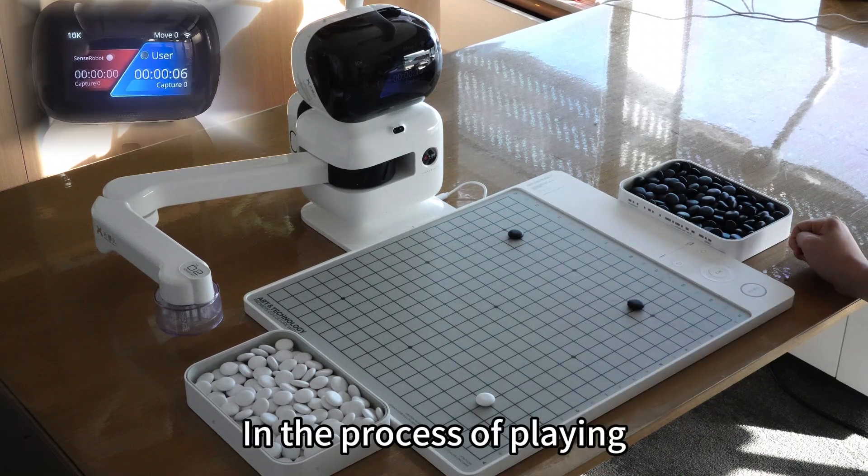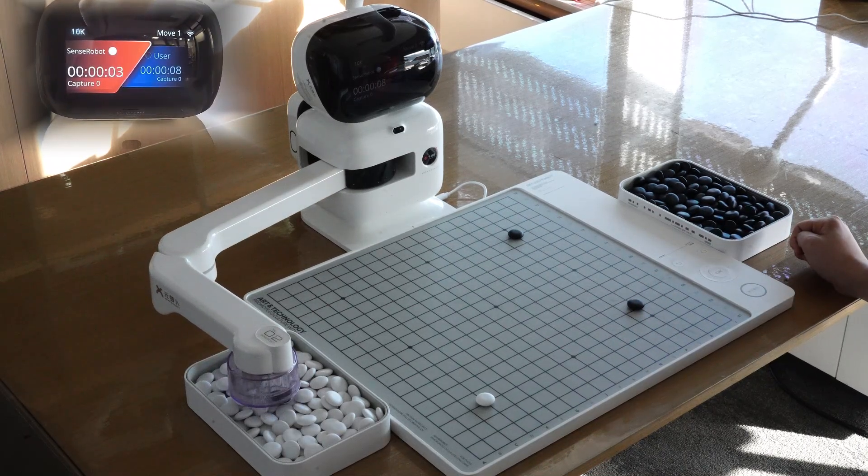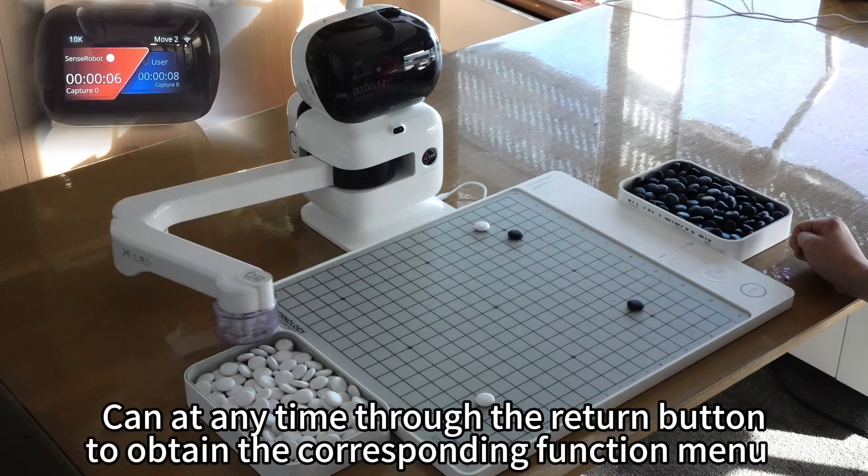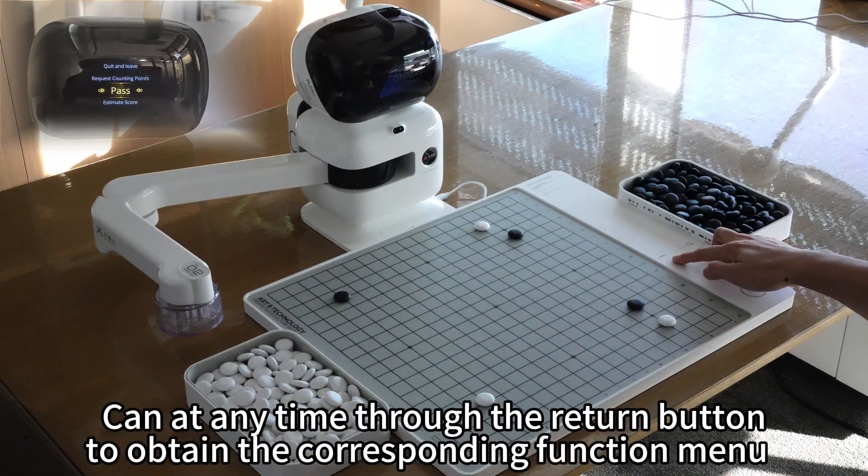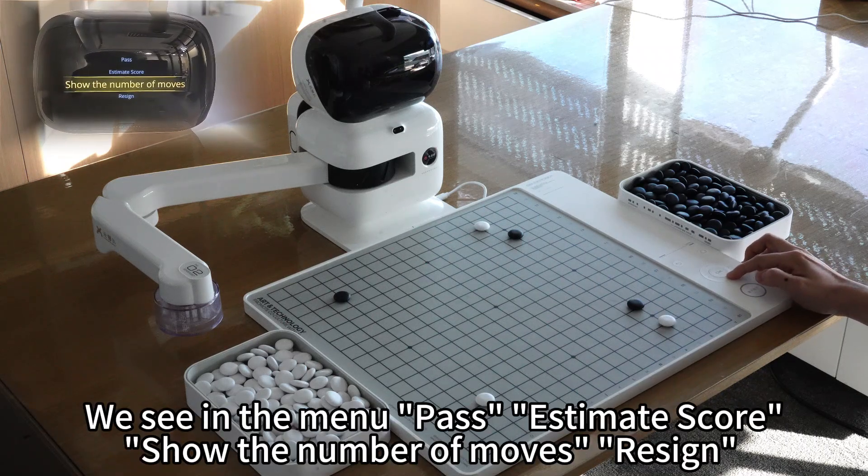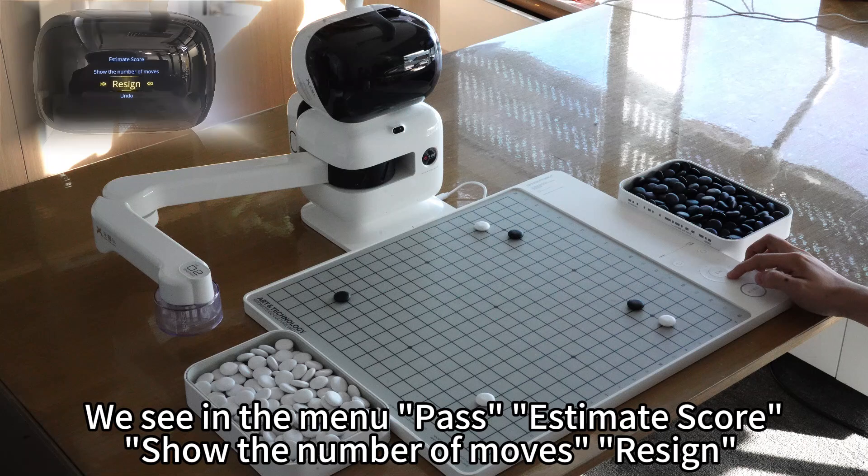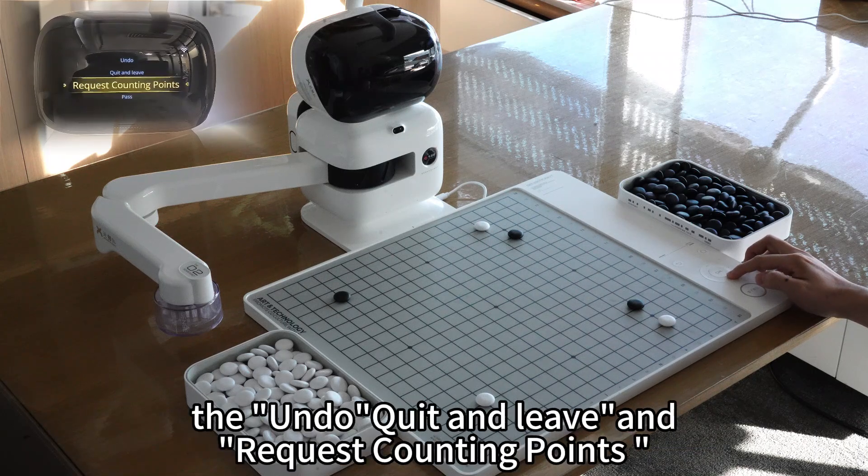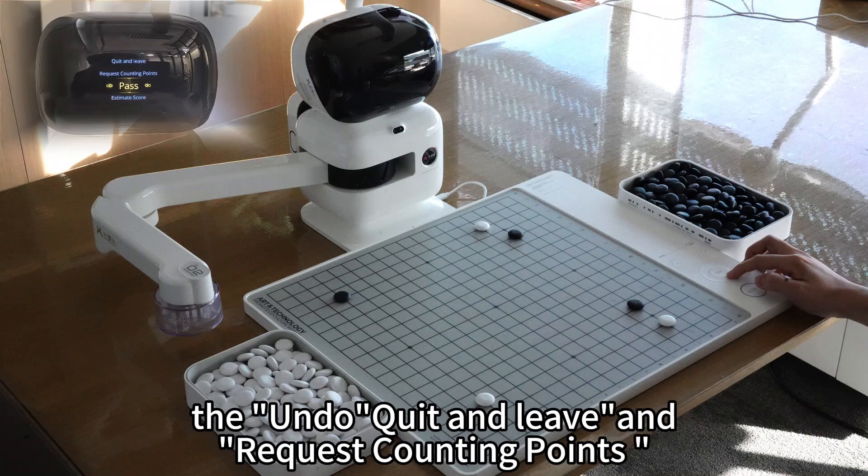In the process of playing, you can at any time through the return button obtain the corresponding function menu. We see in the menu Pass, Estimate Score, show the number of moves, resign, undo, quit and leave end, and request counting points.